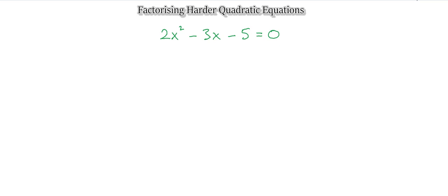Hello there and welcome to SNMB Academy. In this presentation I'll be showing you how to factorize harder quadratic equations. So in front of you here, you have 2x squared minus 3x minus 5 equal to 0.